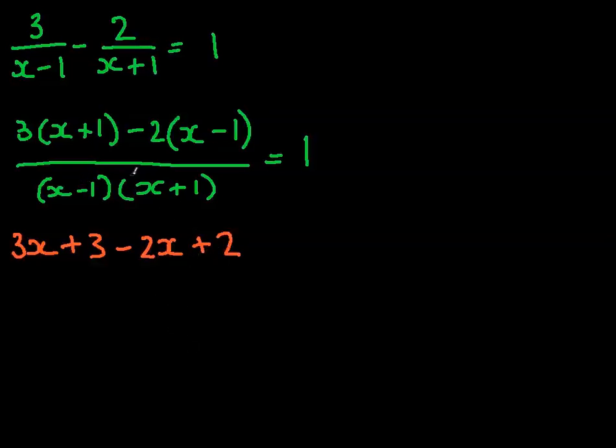So once we have this, we can multiply this out. This is x squared, and minus 1 and plus 1 cancel out, so it's just the difference between two squares, x squared minus 1.